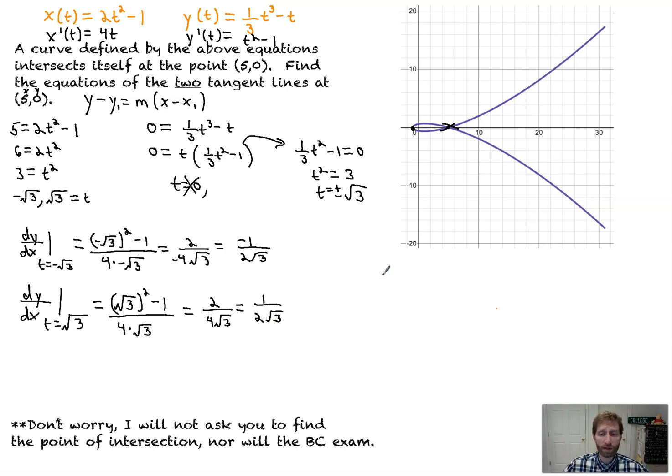So we've got two tangent line equations, y minus 0, that's the y value, equals negative 1 over 2 root 3 times (x minus 5). That's the point that we have right there. That's one equation.